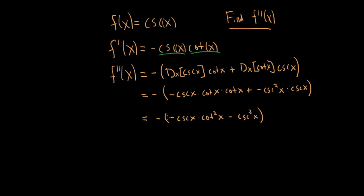Now distribute that negative sign out front, which reverses the sign of everything inside the parentheses. Both terms are currently negative, so that negative sign makes both of them positive. The final solution is cosecant x times cotangent squared x, plus — not minus — cosecant cubed x.